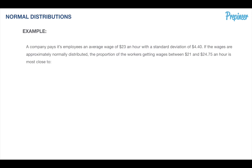A company pays its employees an average wage of $23 an hour with a standard deviation of $4.40. If the wages are approximately normally distributed, the proportion of the workers getting wages between $21 and $24.75 an hour is most close to what?